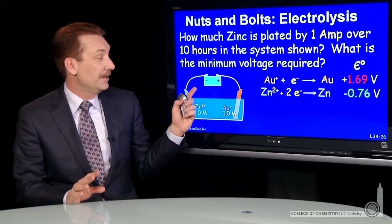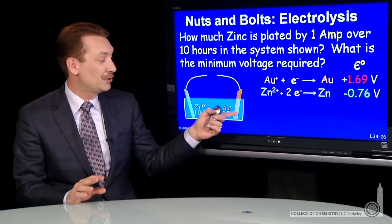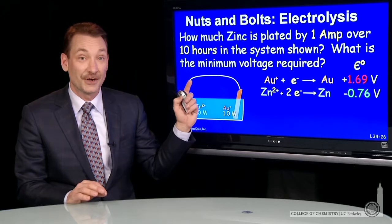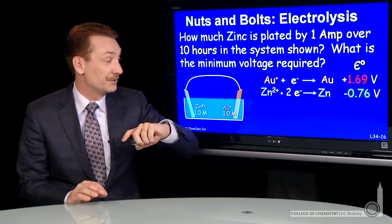Now, if we just connected these two electrodes with a wire, we know the spontaneous direction. What would happen is gold would be reduced.